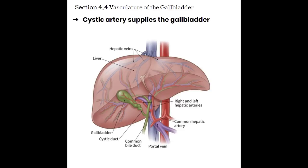Section 4.4, vasculature of the gallbladder. The key thing to know is that the cystic artery supplies the gallbladder. The aorta gives rise to the celiac axis, from which the common hepatic artery branches off, also giving rise to the gastroduodenal artery (GDA). Once the GDA branches off, we form the proper hepatic artery, which branches into the left and right hepatic arteries — and the cystic artery comes off the right hepatic artery to supply the gallbladder. Venous drainage occurs via small veins draining through the hepatic portal system.